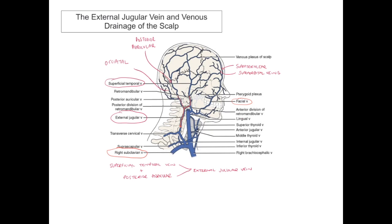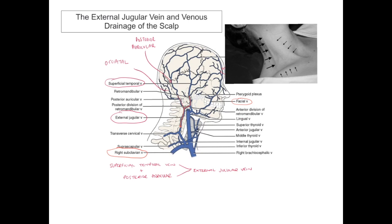The external jugular vein is often most readily visible in a person's neck. This image nicely demonstrates that. Just to orientate you: here's the ear, there's the sternocleidomastoid muscle and the clavicle. We're looking at the right side of this person's neck, and this visible vessel here is the external jugular vein.